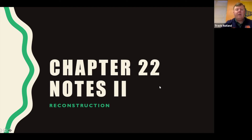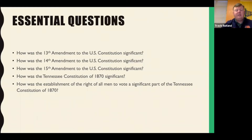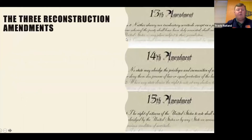Welcome back today. We're going to be getting into basically the second part of Chapter 22, looking at the first part of Reconstruction. To start out, we have some essential questions: How is the 13th Amendment significant? How was the 14th Amendment significant? How was the 15th Amendment significant? How was the Tennessee Constitution of 1870 significant? And how was the establishment of the right of all men to vote a significant part of the Tennessee Constitution of 1870?